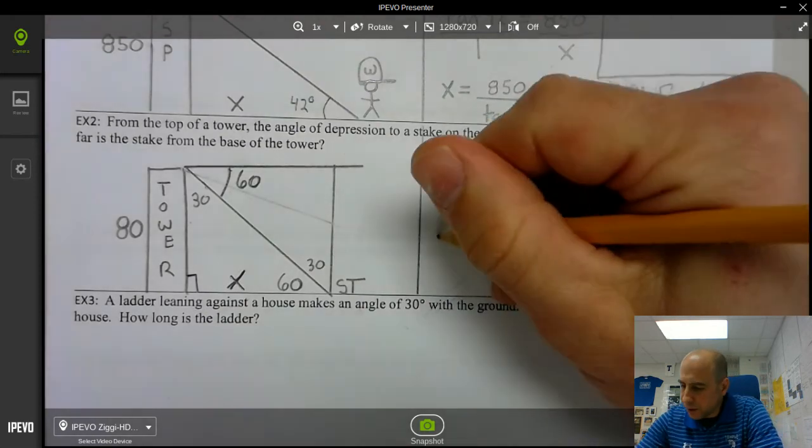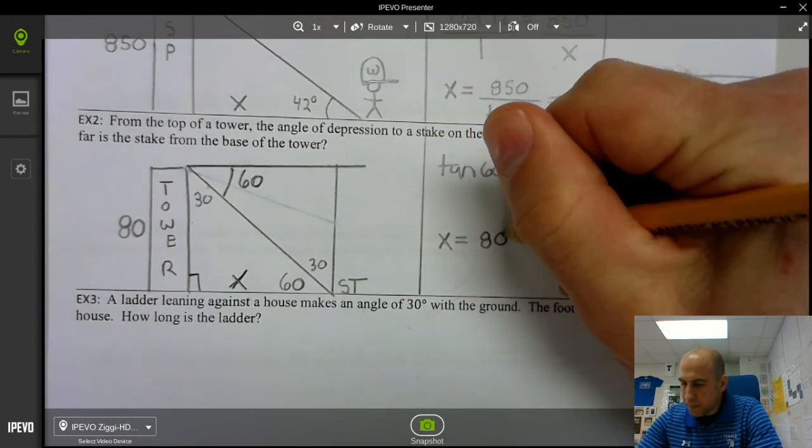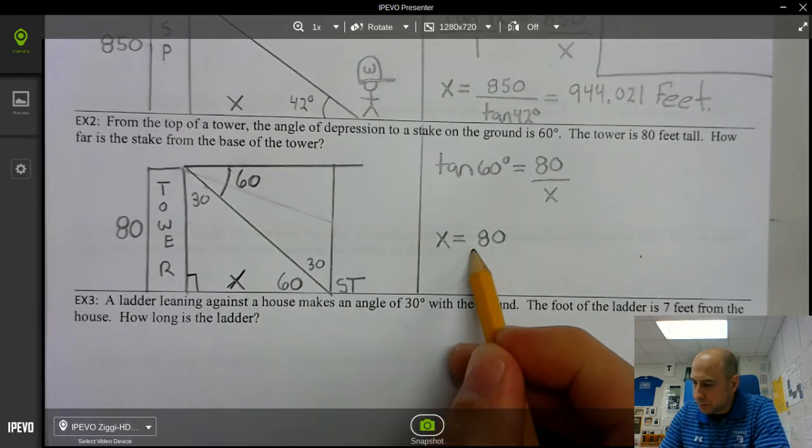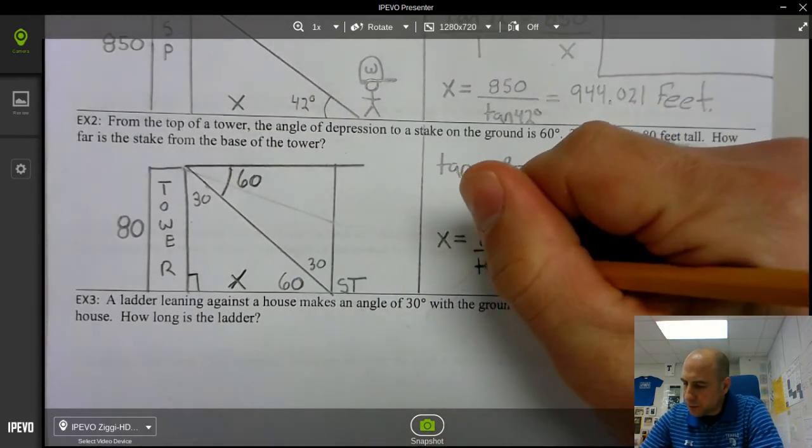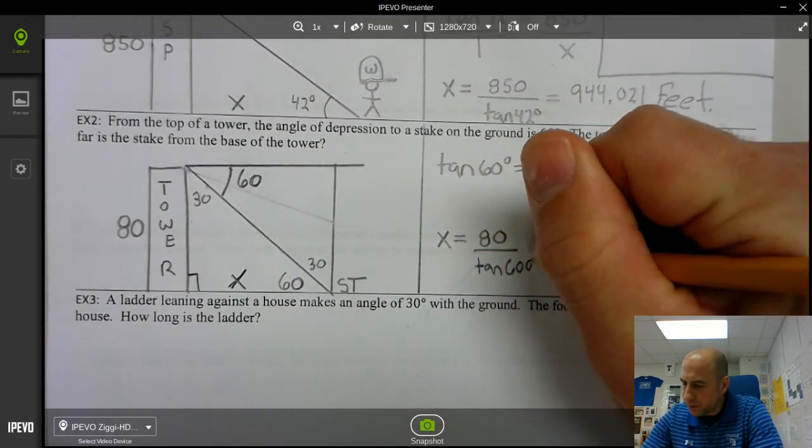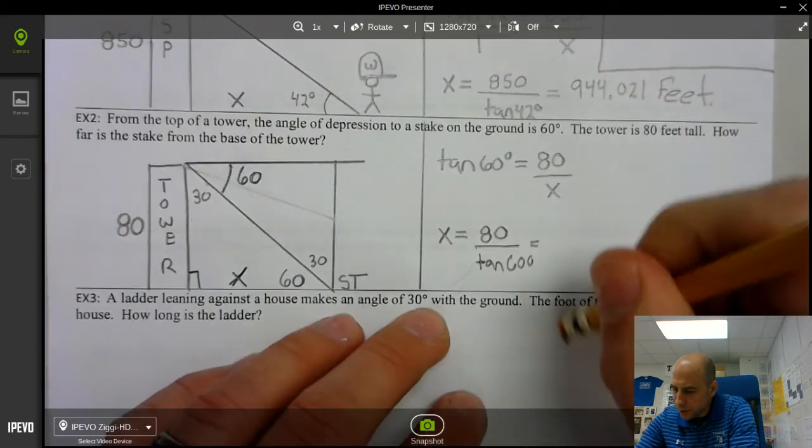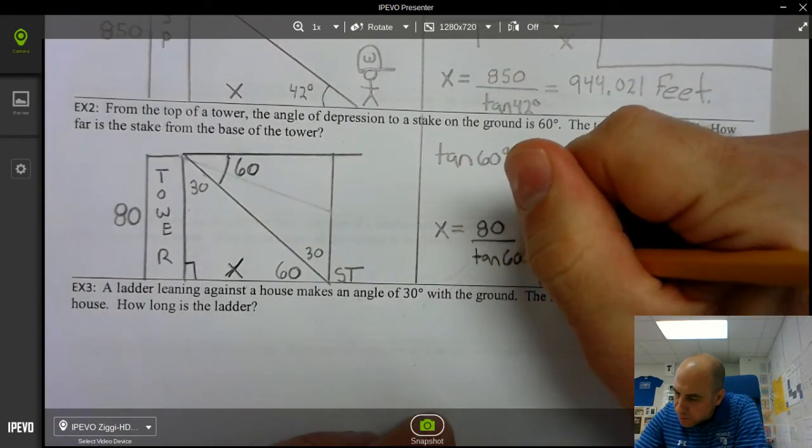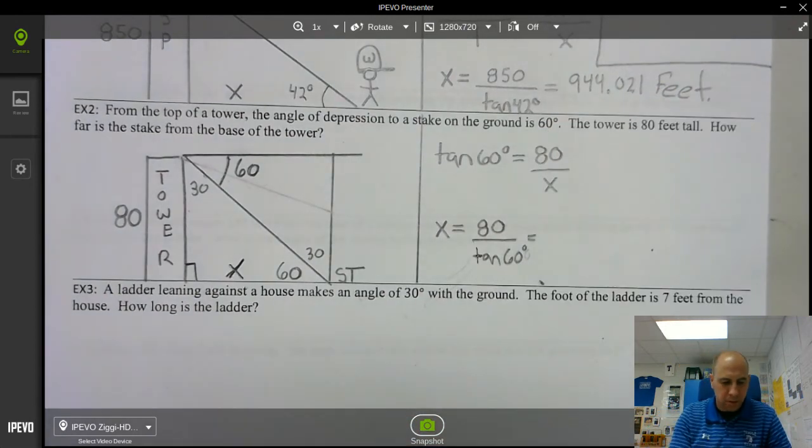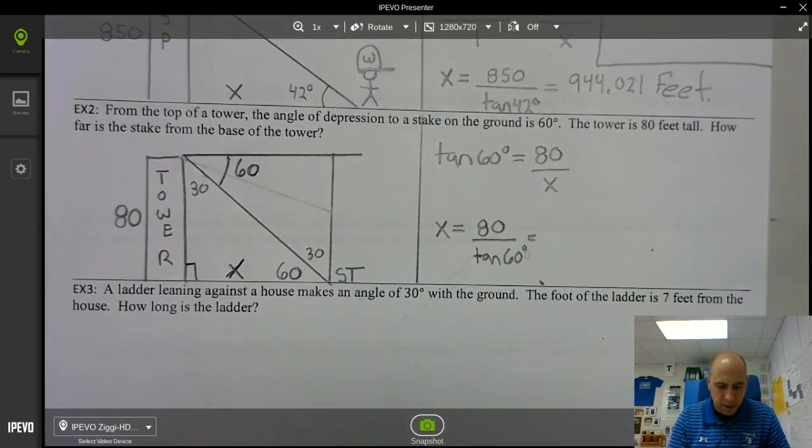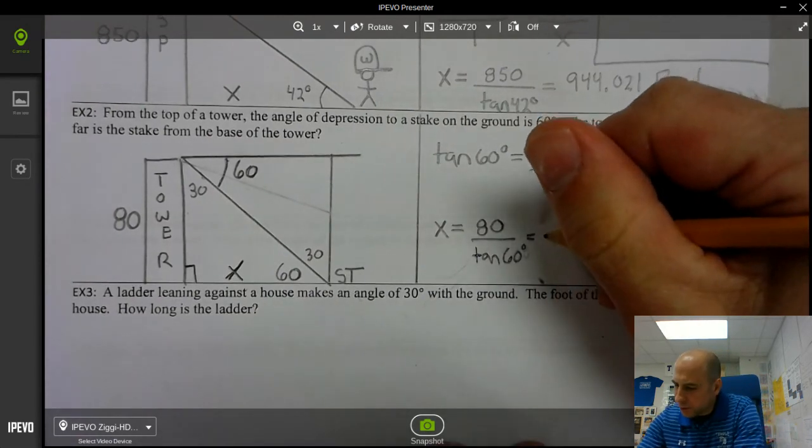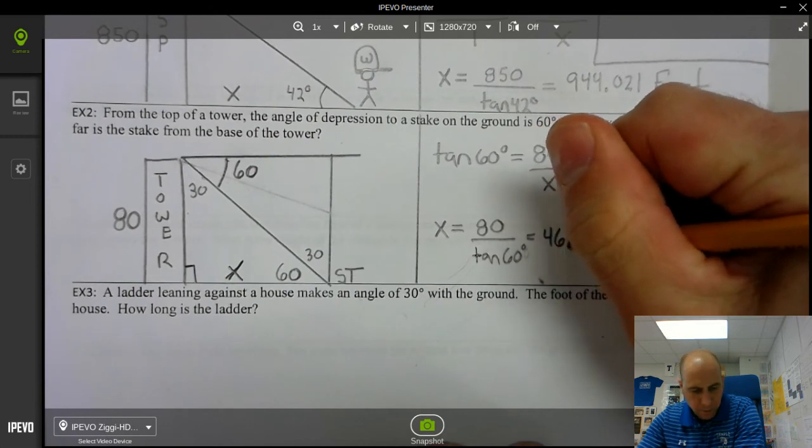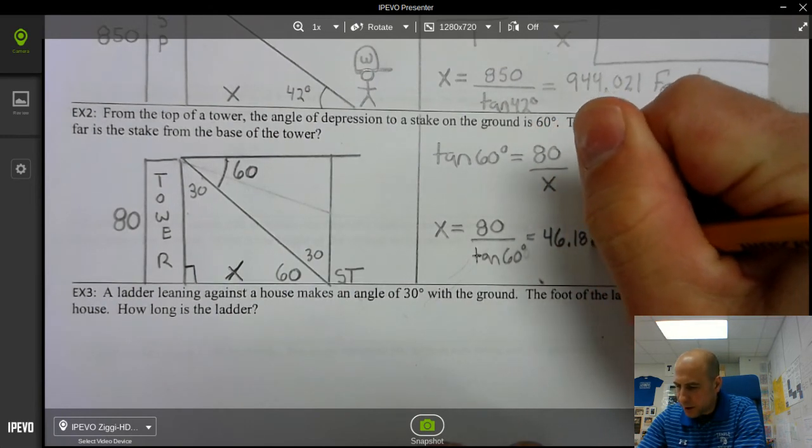Well, you cross multiply and divide, so you get x equals 80 divided by tangent of 60 degrees. Not 600. That should be a degree symbol. So 80 divided by tangent of 60 is 46.188.